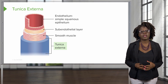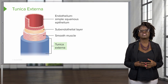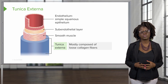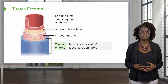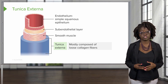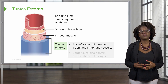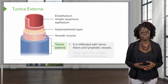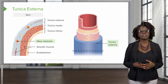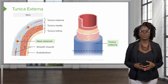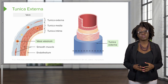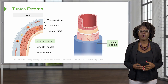The third and outermost layer is our tunica externa, sometimes also called the tunica adventitia. It is composed mostly of loose collagen fibers that protect and reinforce the wall as well as anchor the vessels to their surrounding structures. This layer is also infiltrated with nerve fibers and lymphatic vessels. Large veins contain elastic fibers in this layer. Also within this layer, we have the vasa vasorum, a system of tiny blood vessels found in our larger vessels that functions to nourish this outermost layer.